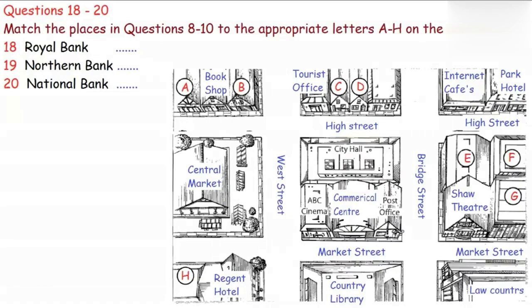Now listen and answer questions 18 to 20. There are plenty of other banks within walking distance. It may be worth shopping around to see what they've got to offer. Can you tell me how to get to a couple of them? For the Royal Bank, you need to turn left when you leave the centre, go along Market Street past the post office, and turn left up Bridge Street past the Shaw Theatre. Then you take the first right, and the Royal is directly opposite the Park Hotel.